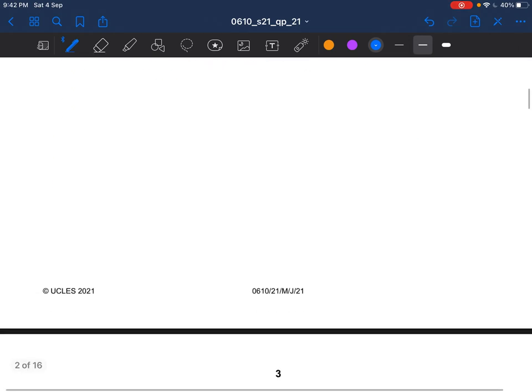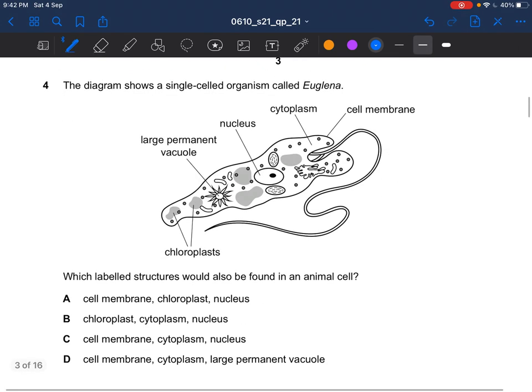Next question. The diagram shows a single-cell organism called Euglena, which labelled structures would also be found in an animal cell. An animal cell wouldn't have chloroplasts. It doesn't have large permanent vacuole. Instead, it has a small vacuole. They would have a nucleus, cytoplasm, cell membrane. And so the answer would be C.